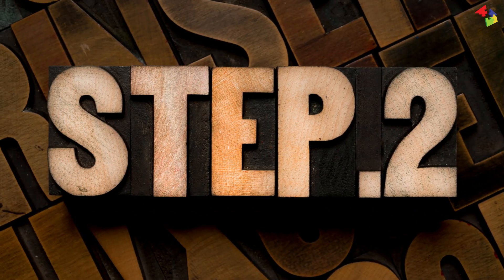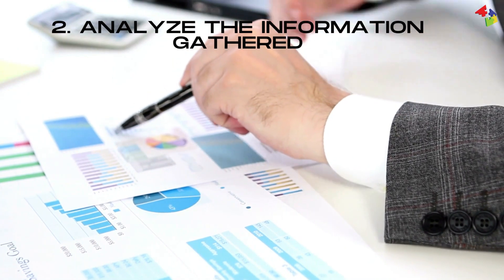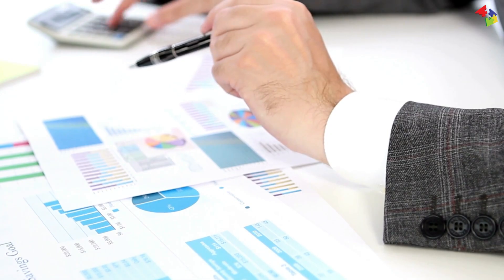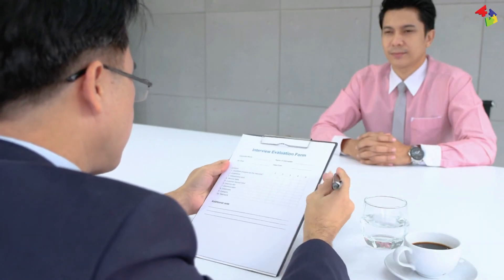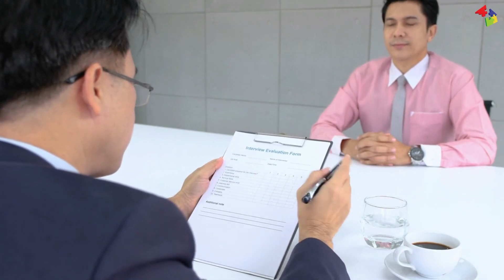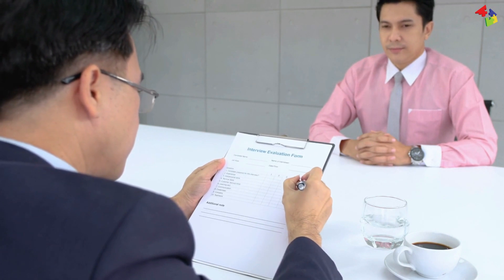Step 2. The second step is to analyze the information gathered. This involves evaluating the sources of information and identifying any biases or assumptions.